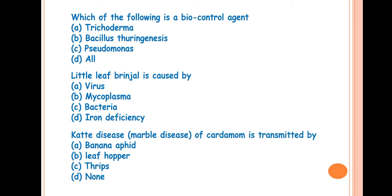Which of the following is a biocontrol agent? The answer is D, all. These are biocontrol agents, meaning living organisms used to control diseases. That may be Trichoderma, this is a fungus, Bacillus thuringiensis, this is a bacteria, and Pseudomonas, also a bacteria. It can act either by competition, competing with the pathogen for nutrients or space, or by production of different chemicals like antibiotics, or by mycoparasitism or hyperparasitism.